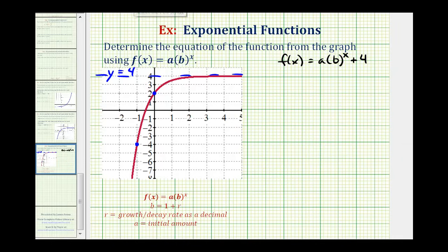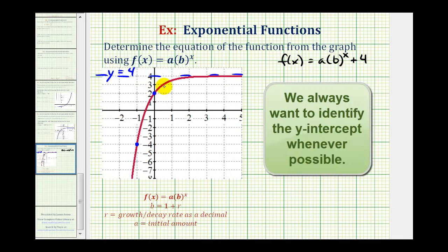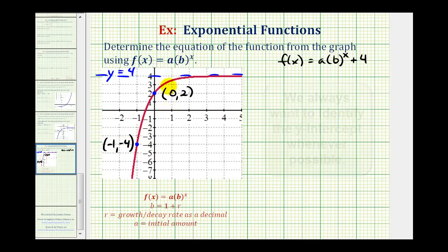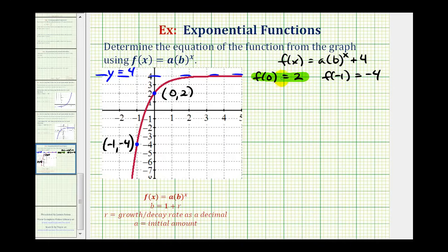Once we recognize this, we can determine the values of a and b by identifying two points on the function. The y-intercept is the point (0, 2), and another point on the graph is (-1, -4). This means f(0) must equal 2 and f(-1) must equal negative four. We'll use the first to find a, and the second to find b.